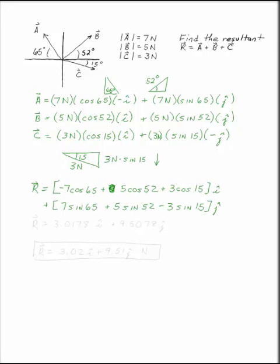The j component will be 7 sine 65 plus 5 sine 52 minus 3 sine 15. And you can pull that out on your calculator to show it.